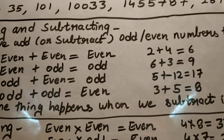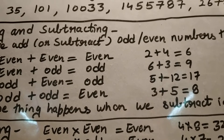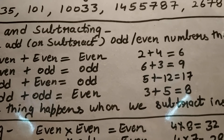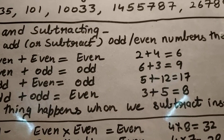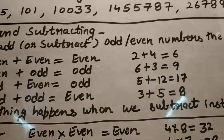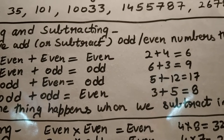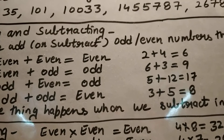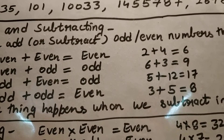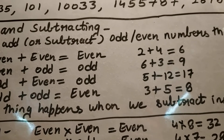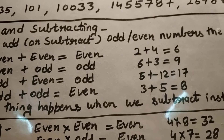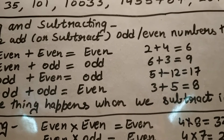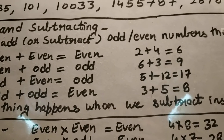Six is even and three is odd; six plus three gives nine, which is odd. Then odd plus even also equals odd — five is odd, twelve is even, and five plus twelve equals seventeen, which is odd. And odd plus odd gives an even number — three plus five, both odd, gives eight which is even.